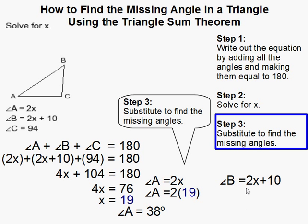Okay, now let's see it for B. So B is 2x plus 10, according to our original givens. Then I substitute 19 for x, and that gives me 48 degrees.